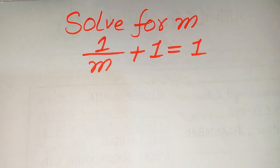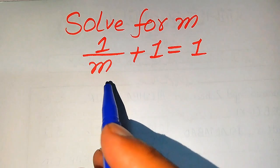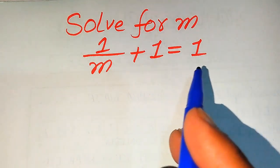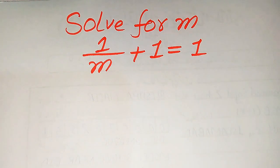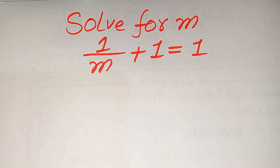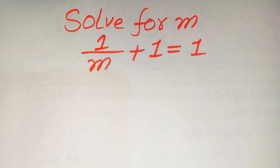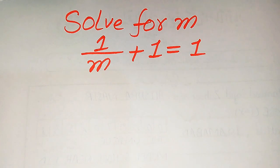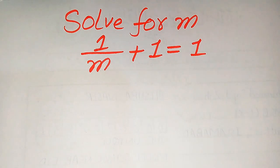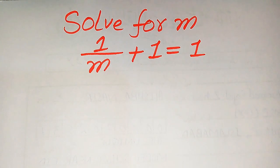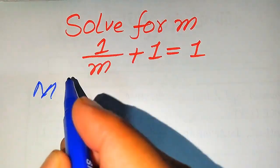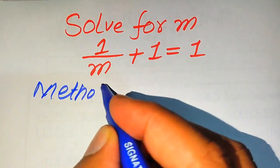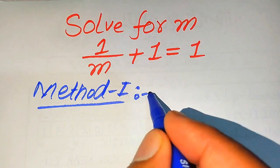Hello everyone. How to solve this problem for the values of m: 1 over m plus 1 equals 1. We will solve this problem by first finding all the roots of this equation, then verifying which roots satisfy the equation and which are extraneous. I will also explain the difference between a solution and an extraneous root. We will solve this using two methods.